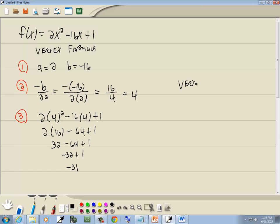So our vertex is going to be the 4 we found in step 2. That's our x part of our vertex. And -31 we just found as the y part of our vertex. So our vertex is (4, -31).